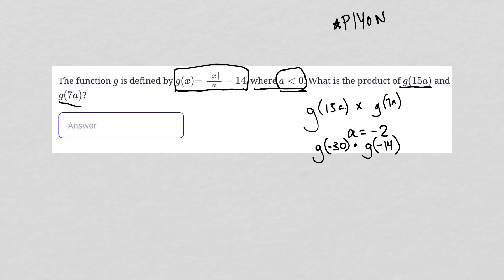So g of negative 30. Well, I know if g(x) is equal to the absolute value of x over a minus 14, then g(-30) would be equal to the absolute value of negative 30 over a, which is negative 2, minus 14. The absolute value of negative 30 is positive 30 over negative 2 minus 14. 30 divided by negative 2 is negative 15, minus 14 is negative 29. So we got that taken care of.